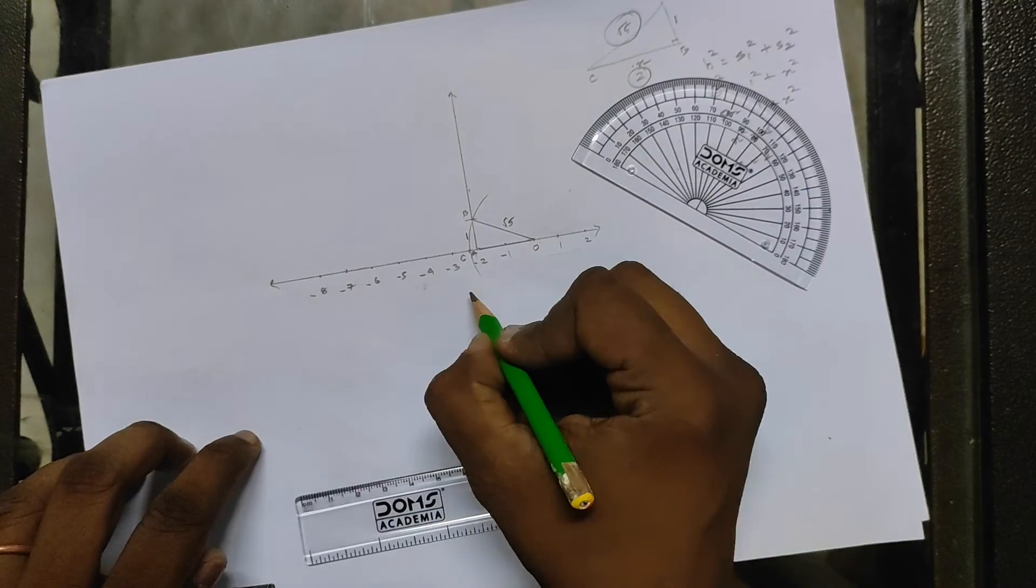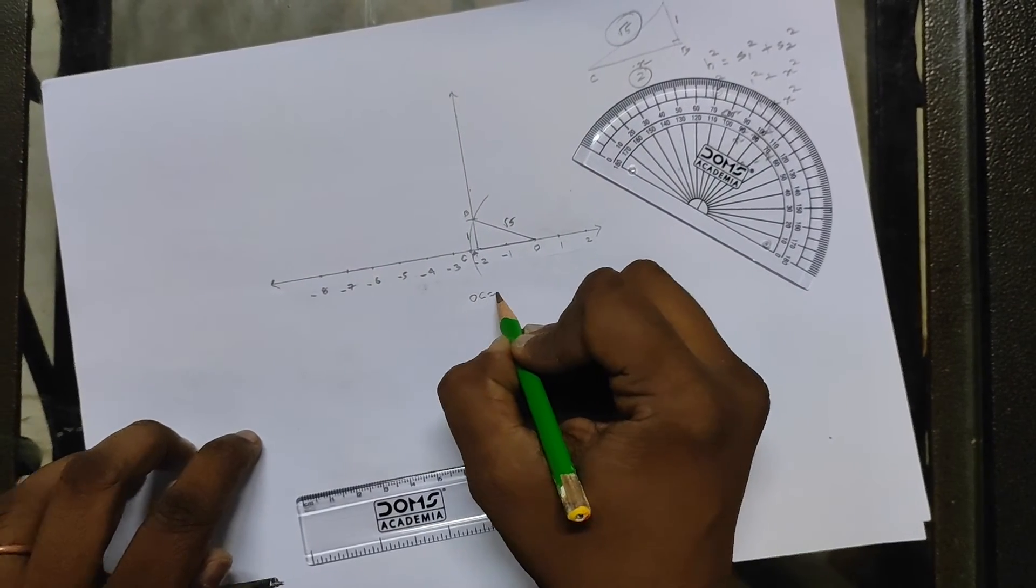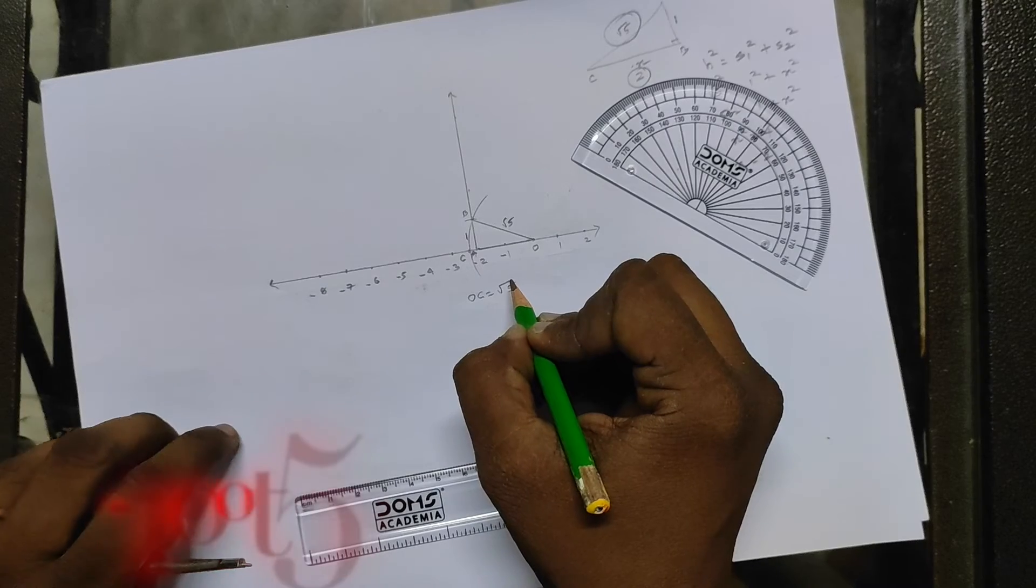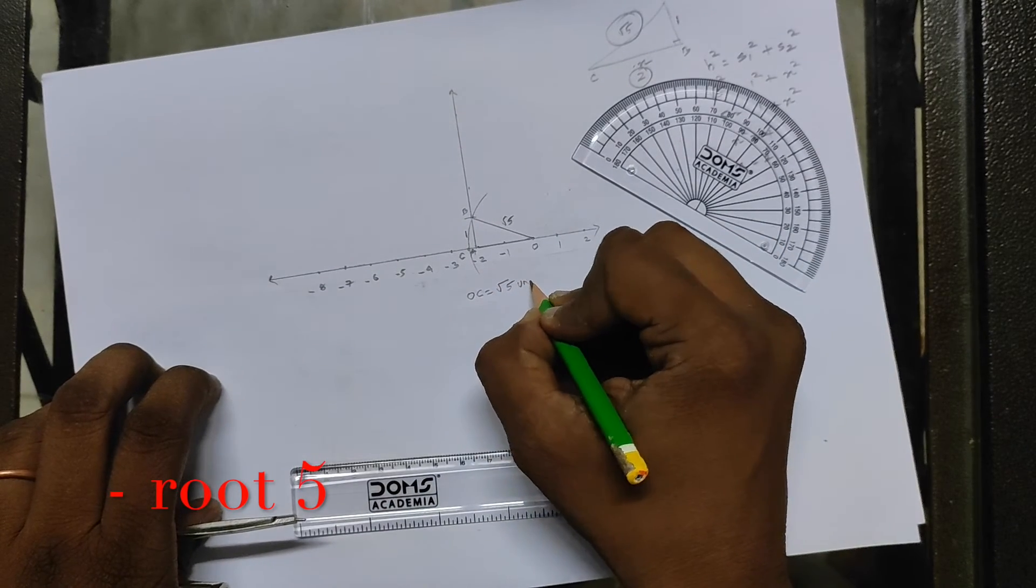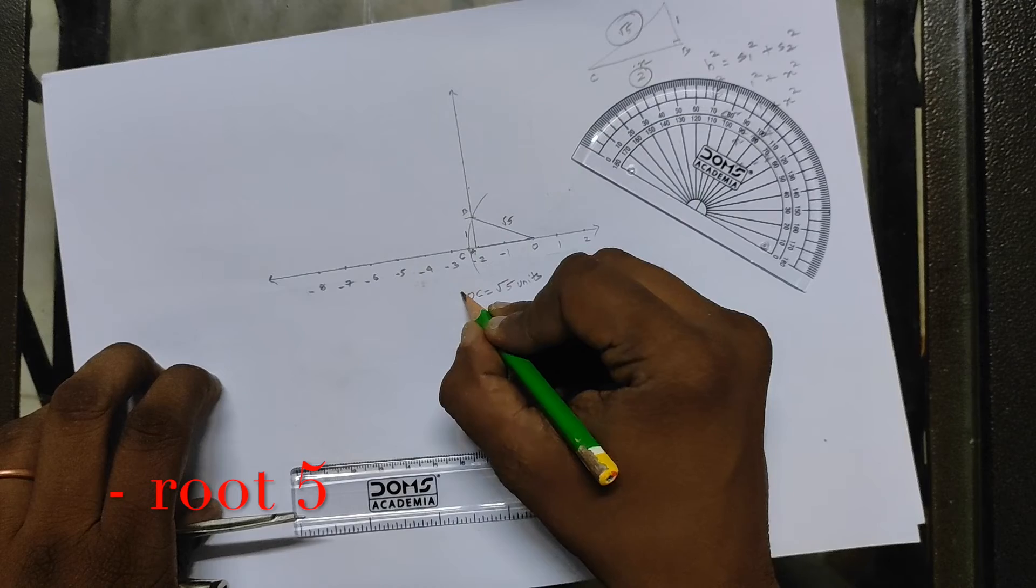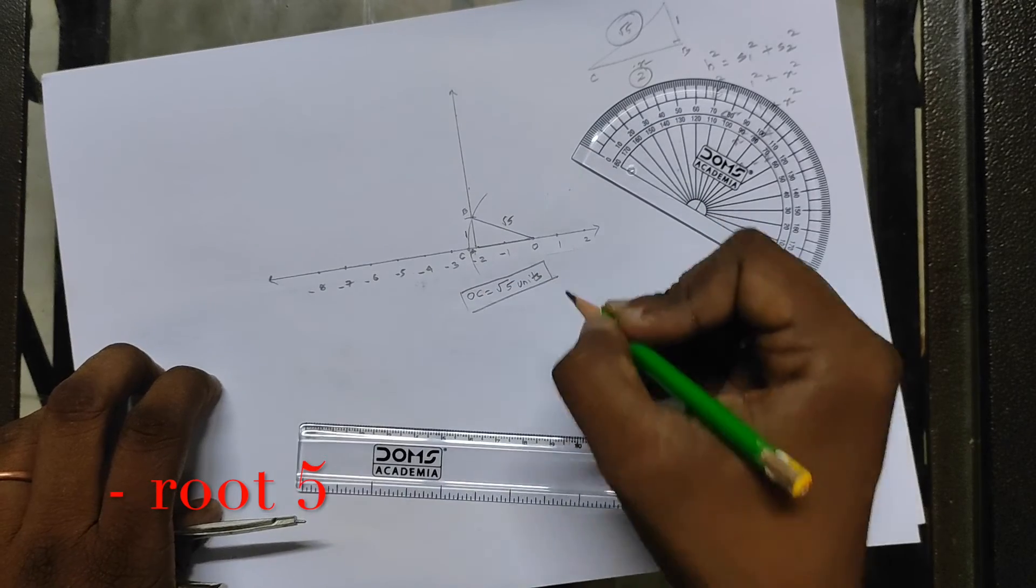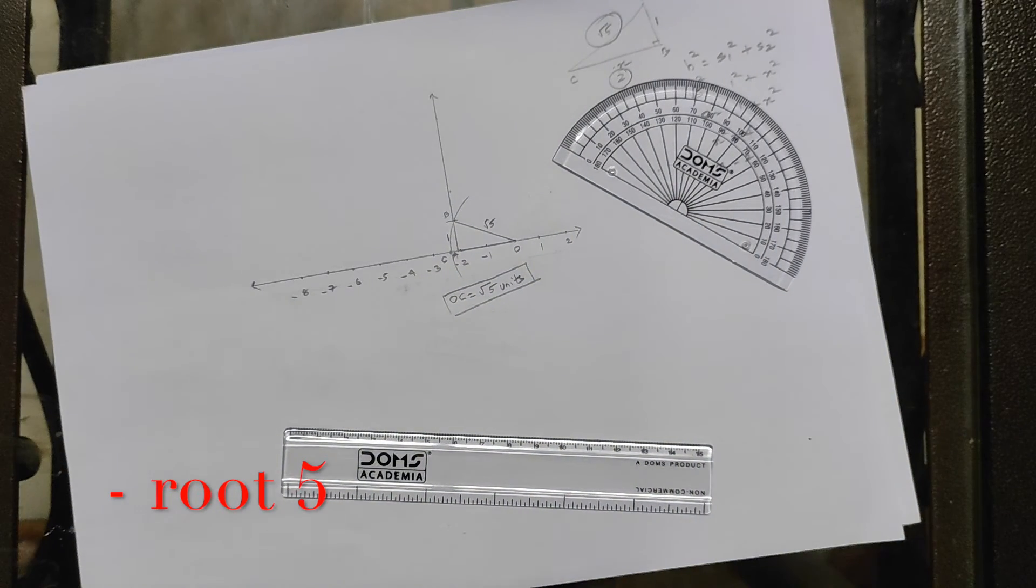Okay, so wherever it intersects, let's call it as C. So here, OC is root 5 units. It's nothing given, so let's call it as units. So OC is equal to root 5 units. That's it, that's how you do it.